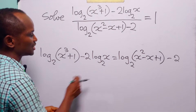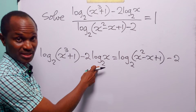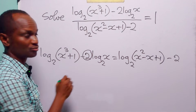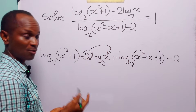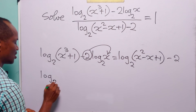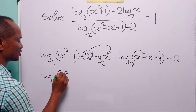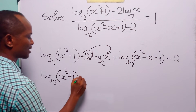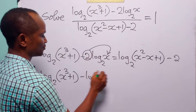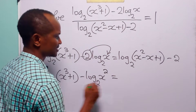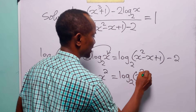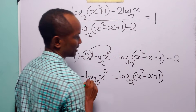Now the next thing we need to do is to apply the power rule of logarithms to this term. We are going to take up this multiplier 2 to become the power of x. On the left hand side we have log to base 2 of x cubed plus 1 minus log to base 2 of x to the power 2, and this is equal to log to base 2 of x squared minus x plus 1.